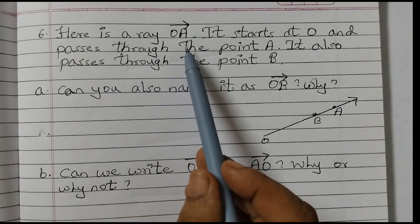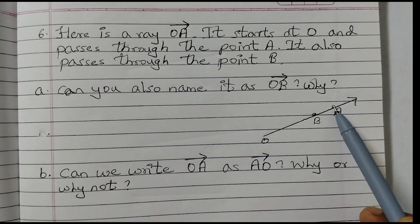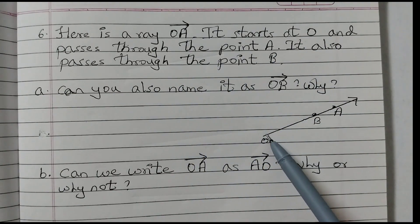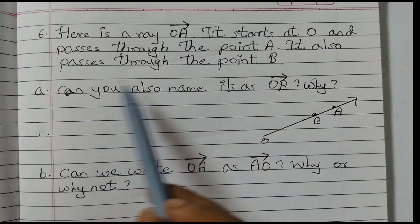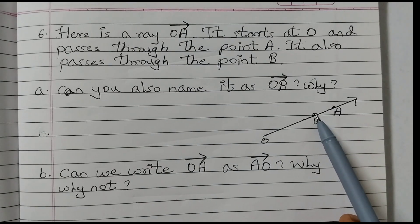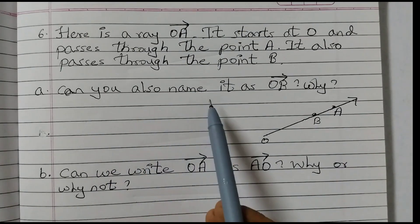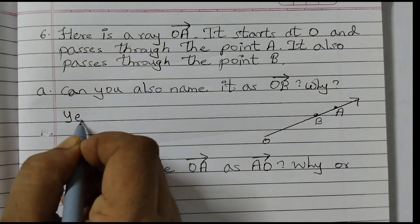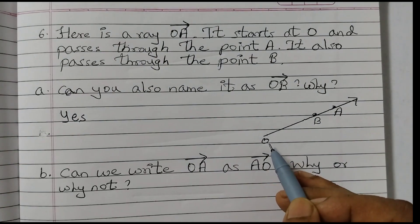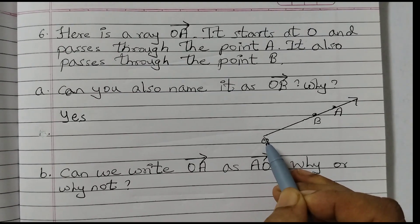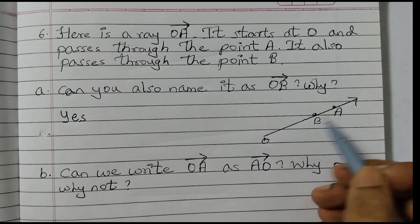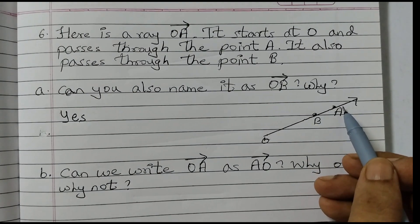Here is a Ray OA. OA is the Ray. It starts at O and passes through the point A. It starts at O. O is the starting point. And it passes through the point A. It also passes through the point B. So it is also passing through point B. Can you also name it as Ray OB? So the answer is yes. We can name it as Ray OB because it has a starting point at O and B is the point on the path of the Ray.